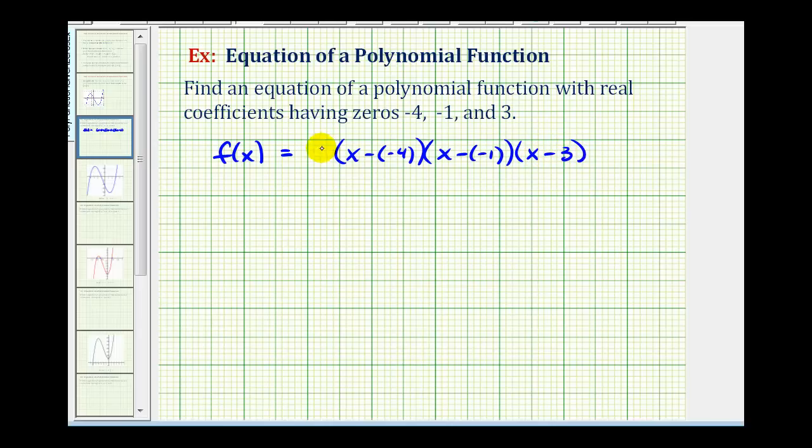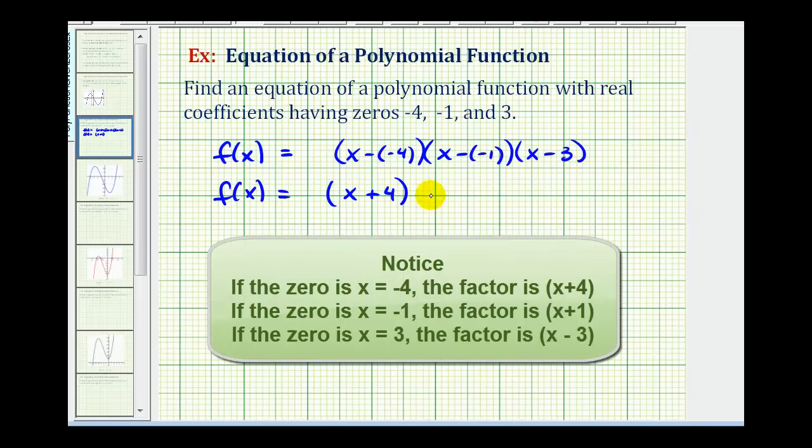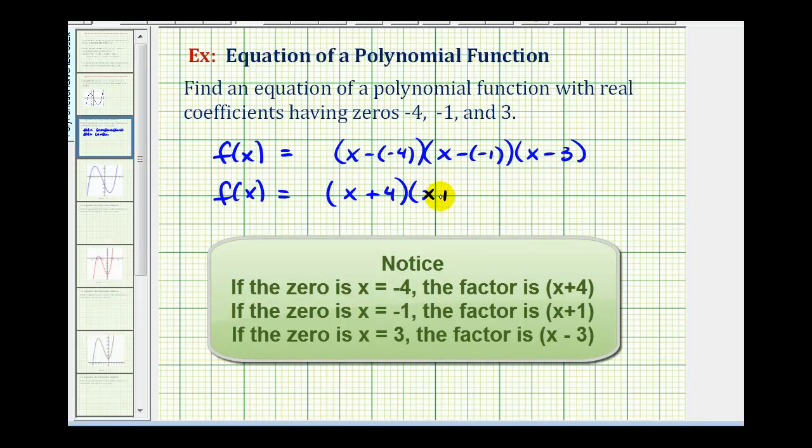Again, we could put a constant here, but since we don't have any fractions, we'll go ahead and let a equal 1. So now we're going to simplify our binomial factors and then find this product. So f of x is going to be equal to, we have a factor of x plus 4, a factor of x plus 1, and a factor of x minus 3.